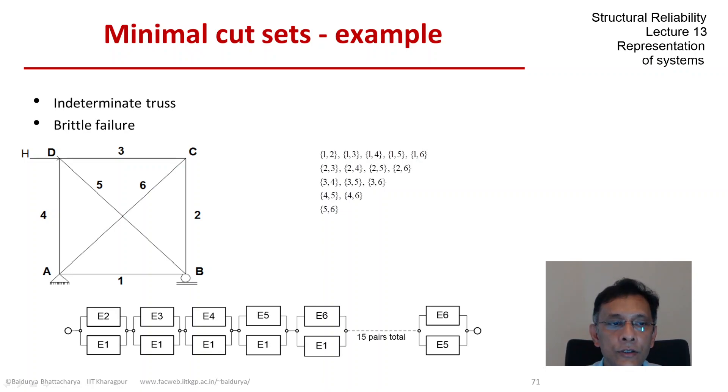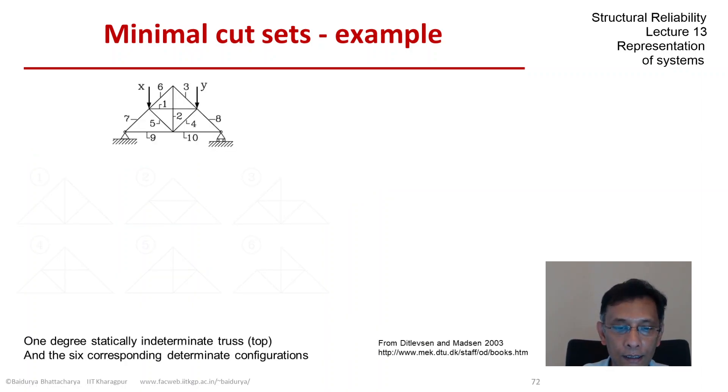So this leads into our next problem, which is an additional few truss members around this square truss with two diagonals. This problem is taken from Ditlevsen and Madsen's book. You see the truss. It's quite similar to what we had before, except that there are four additional truss members built around the square truss that we had in the previous slide.